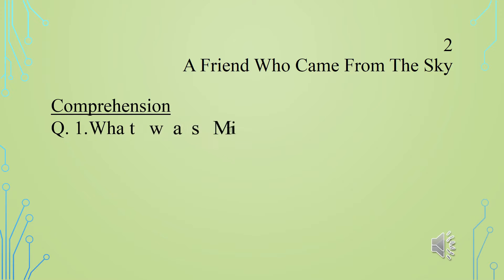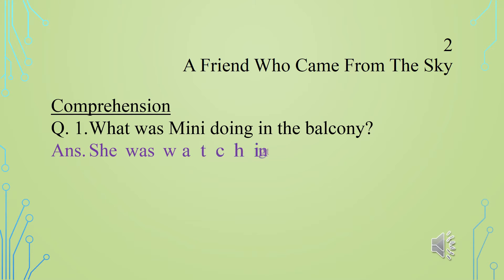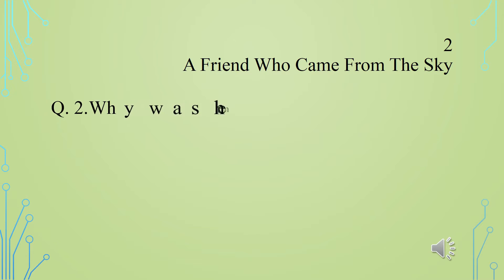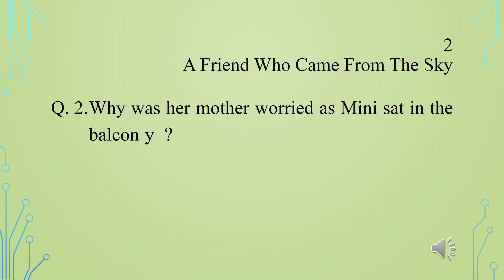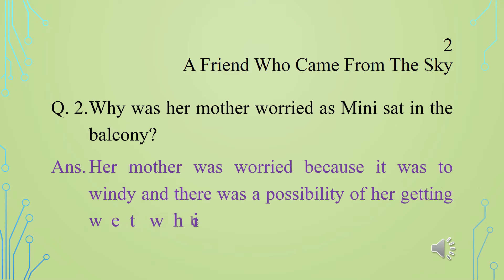Comprehension Question 1: What was Minnie doing in the balcony? Answer: She was watching the children playing in the park outside. Question 2: Why was her mother worried as Minnie sat in the balcony? Answer: Her mother was worried because it was too windy and there was a possibility of her getting wet, which she didn't want.